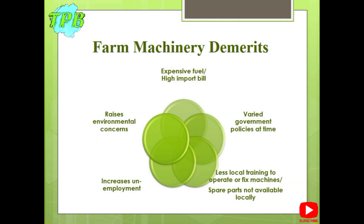But farm machinery also has some demerits. Machines run on expensive fuel and ever-changing fuel prices affect their productivity. They may result in a high import bill since both the fuel and farm machines are often imported in Pakistan. Varied and inconsistent government policies on importing these machines may discourage farmers. There are not many locally trained people who can operate or fix these machines, and spare parts may not be locally available. Increased use of these machines may also raise unemployment, since one machine can replace ten or more people.